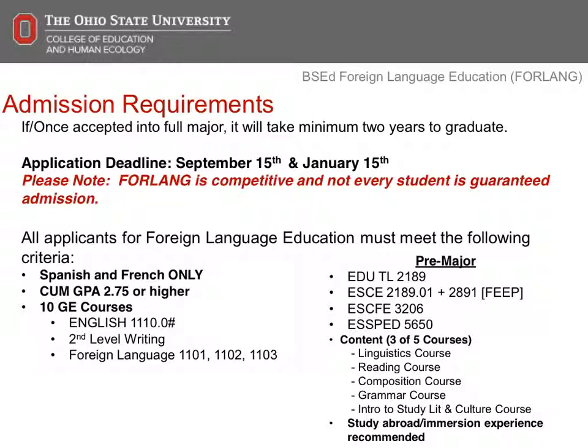Students must also choose three of the five content courses, which are a linguistics course, a reading course, a composition course, a grammar course, and an intro to study literature and culture course. It is also recommended that students study abroad or obtain immersion experience.